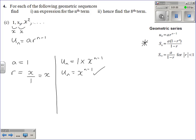When you're finding the 8th term, n equals 8, so just substitute that in. You've got u8 equals x to the power of 8 minus 1, which is 7. You might be thinking, well, I don't know what x is, but the question was given to you in terms of x, and that is your answer.